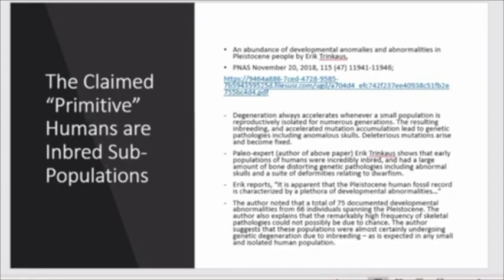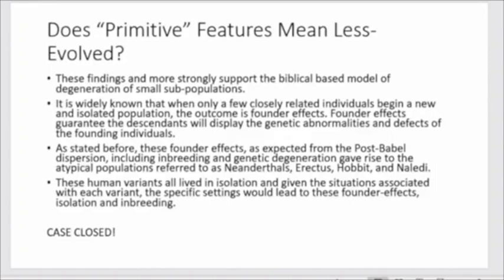This is exactly what we'd expect based on a post-Babel dispersion of isolation and subsequent inbreeding. The author suggests that these populations were almost certainly undergoing genetic degeneration due to inbreeding, as is expected in any small and isolated population. So these human variants they all lived in isolation.